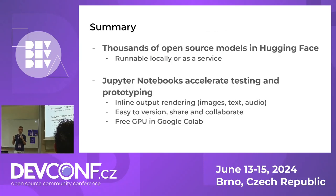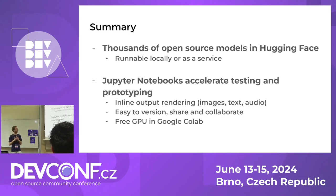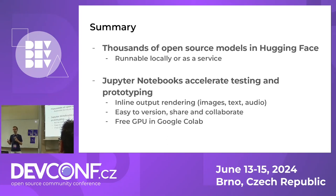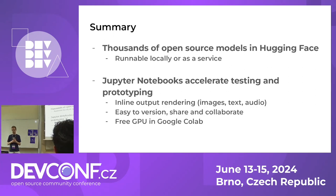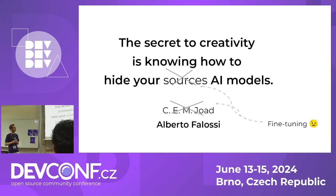In summary: thousands of models every day on Hugging Face; you can run them as a service or locally depending on your needs. You have plenty of choices, which is great when you're experimenting and maybe don't have clear ideas yet. Jupyter notebooks are a good environment that can accelerate your testing and prototyping. Remember that Google Colab as of June 2024 is offering a free GPU - there are also other similar online platforms - or you can run everything locally. I tried to find an original quote to end the talk but couldn't, so I took an existing one and changed it - or in honor of machine learning, I fine-tuned it. Thank you.